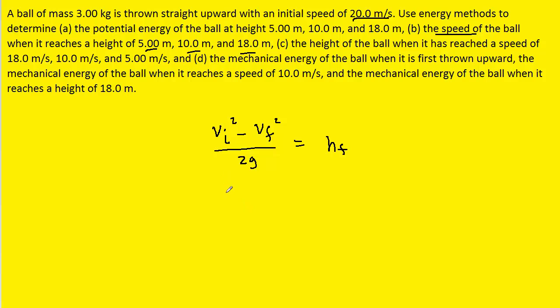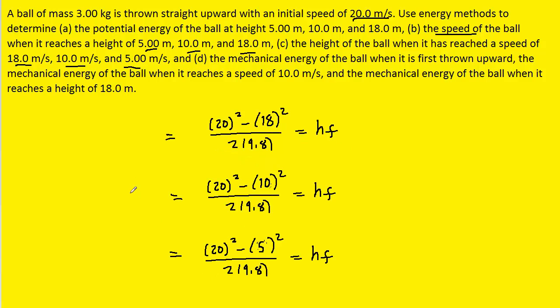And then at this point, we can plug in all of the values. Remember, the initial velocity was 20. The final is going to take on these three different values, and g is 9.8. So let's set up the three calculations.